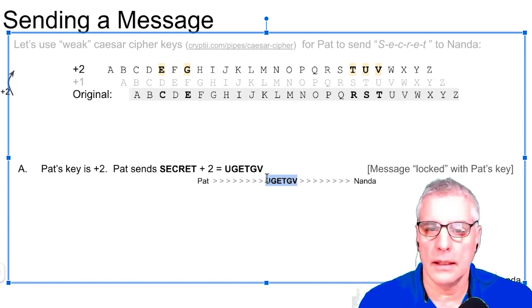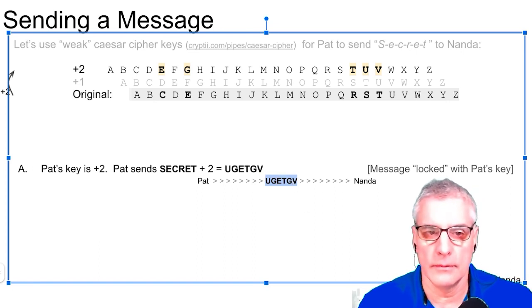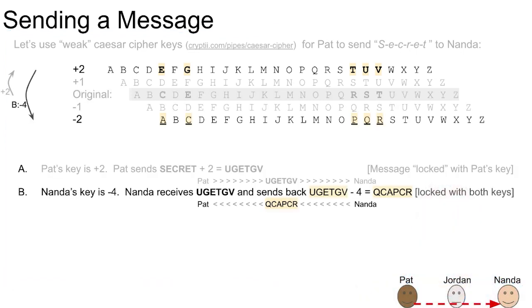Jordan gets it in the middle, and it's like, oh, what's this? That doesn't make sense. And then we go on to the next step. Now, Nanda's key is minus four. So Nanda receives U-G-E-T-G-E-V, doesn't know what Pat's key is. So Nanda gets U-G-E-T-G-E-V, and then Nanda's key is minus four. So here's Nanda's.